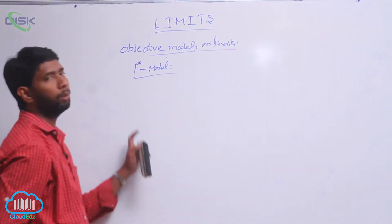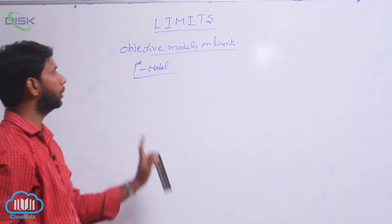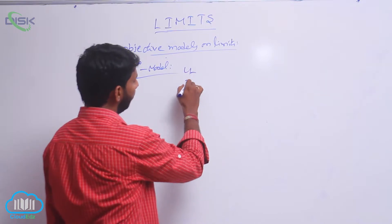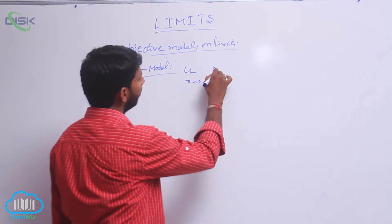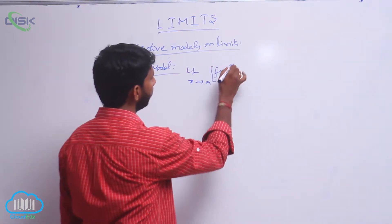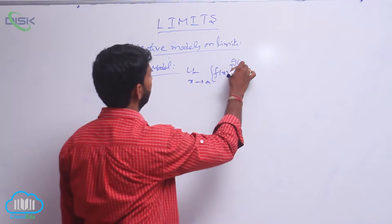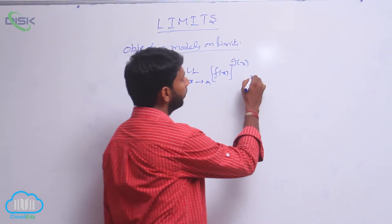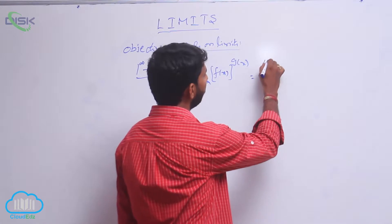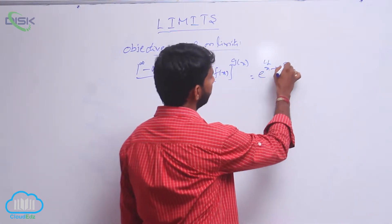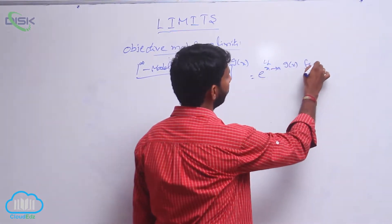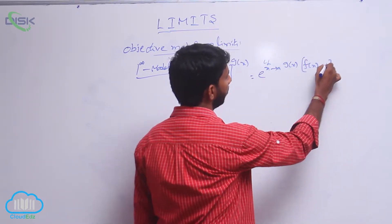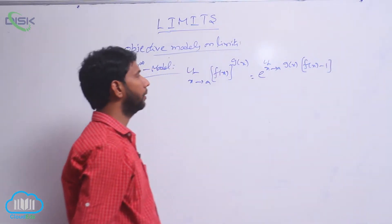The 1 power infinity model — very important objective type questions. The 1 power infinity model is: limit extends to a of f(x)^g(x) is equal to e power [limit extends to a of g(x) into (f(x) minus 1)].